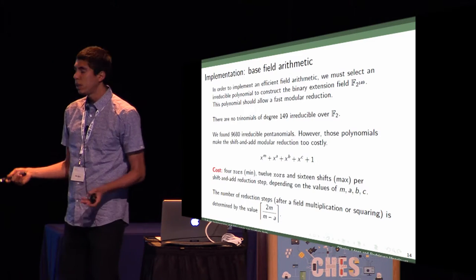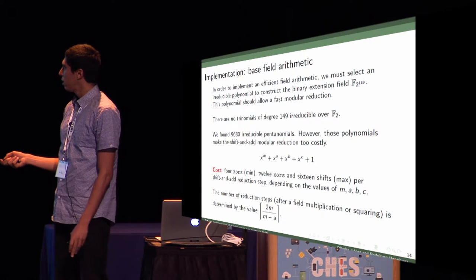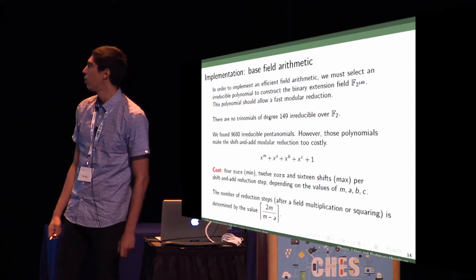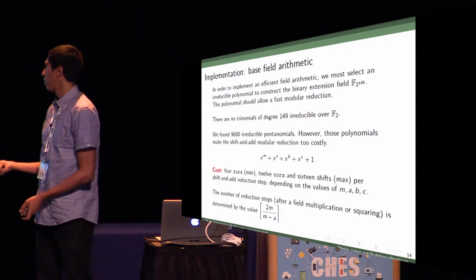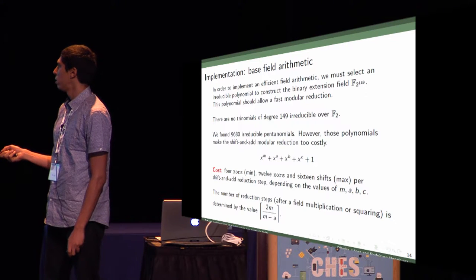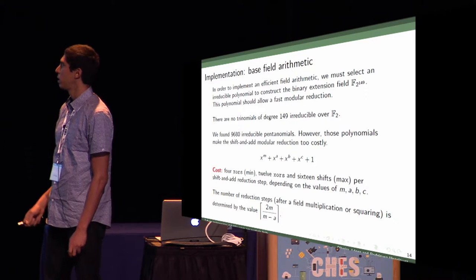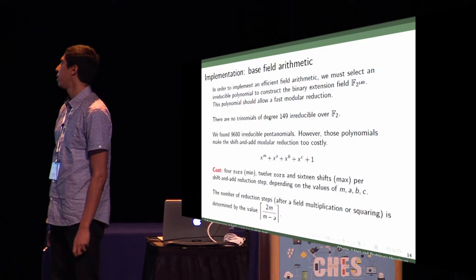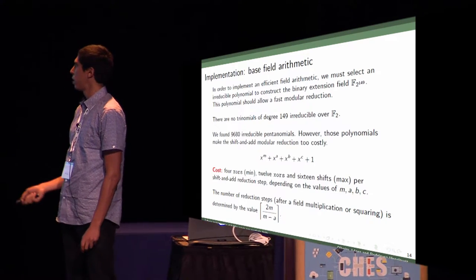For example, for the minimum cost, if all these parameters are perfect, we need like four XORs per step, where each step is determined by the difference between M and A. In the worst case, we need 12 XORs and 16 shifts per step.